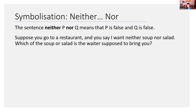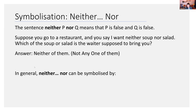When you say 'neither soup nor salad' you're saying you don't want any one of them. So there are actually two ways of symbolizing 'neither nor': one way is 'not p and not q,' but there's a different way — you can say 'negation of (p disjunction q).' Remember, p disjunction q is true in three situations: p is true, q is true, or both are true. As soon as you apply a negation, there's only one way it is true: when you have neither p nor q, that is, p and q are both false.